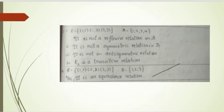Question four: is the relation R = {(1,1),(2,2),(3,3)} on set A = {1,2,3} an equivalence relation? The answer is yes.